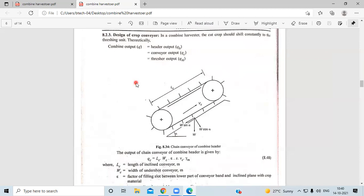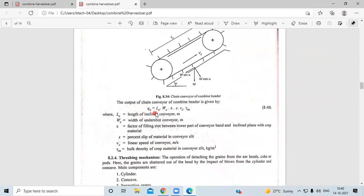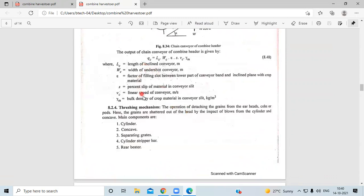Next is the design of crop conveyor. Combined output equals header output, conveyor output, and thresher output. Output of the chain conveyor QC equals LC times WC times EtaS times VC times Gamma M. These are the particulars.